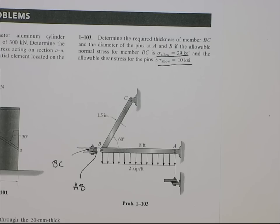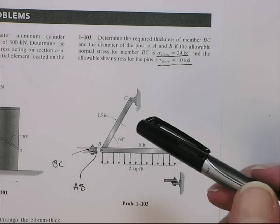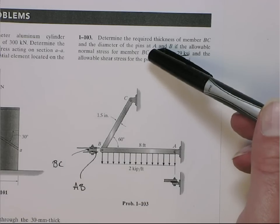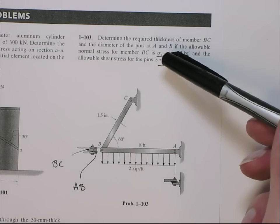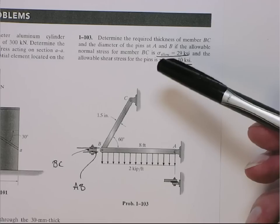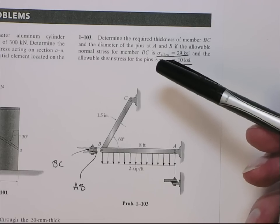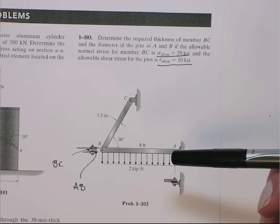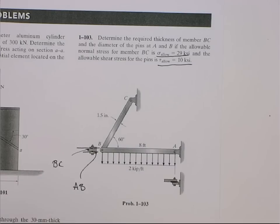We actually have three elements to size: the pin at A, the pin at B, and member BC. The pins at A and B are assumed to be the same diameter — you don't want different sized pins. So we figure out the max stress in both, one will be higher, that'll be our limiting design case, and that's what we'll use to design the pin diameter.